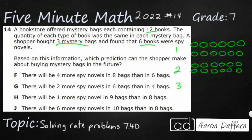We know that there are six total spy novels, and we know that there are the same number of each type of novel in each bag. So the spy novels can't all be bunched into one mystery bag. They need to be split evenly. With six spy novels across three bags, that's two spy novels per bag. I'll shade those in.